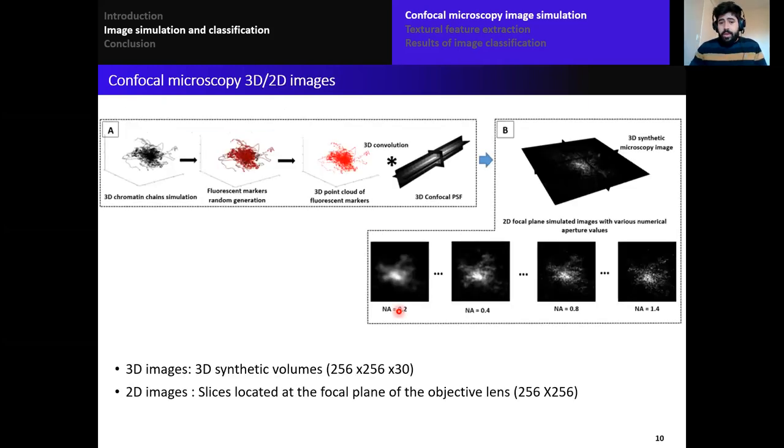At block B, the output of block A will be the 3D synthetic volume. And to have the 2D image, we take only the slices located at the focal plane of the objective lens. This means the XY slices at the middle of the 3D volume as the slices located at the focal plane. And then, we try to do the comparison between using the 3D or the 2D.